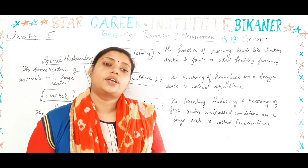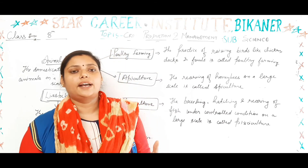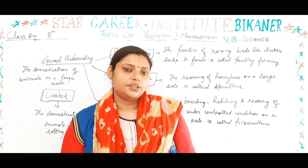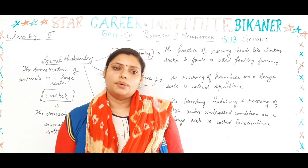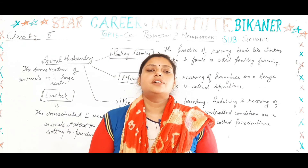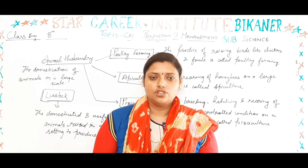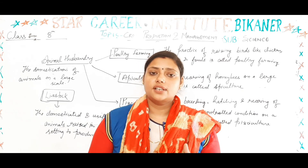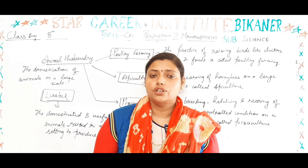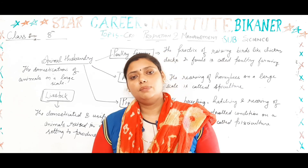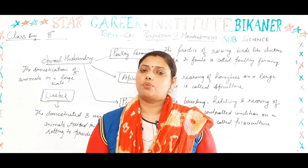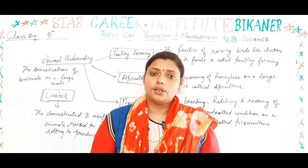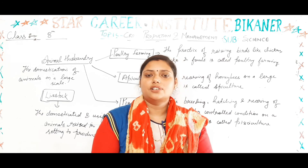There are also other branches such as sericulture and lac culture, through which we obtain benefits from animals. Many things are obtained from animals, such as eggs and meat, which are rich in protein and vitamins that are important for the human body. This concludes our topic of animal husbandry under crop production and management.